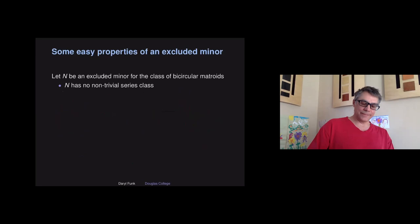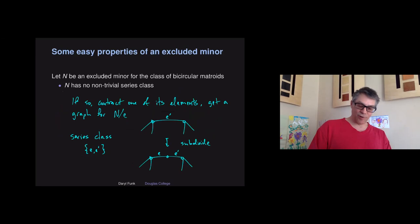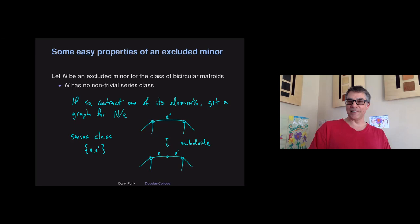There are three easy properties that all excluded minors for the class of bicircular matroids have. First, an excluded minor will not have any non-trivial series classes. Suppose it did and E' was a series class — contract E and now it's bicircular; it has a graph representation where E is an edge. Just subdivide it and label one of the edges E'. Now these two elements are in series and you have a bicircular representation of your excluded minor. That's not possible. So no series classes in an excluded minor.